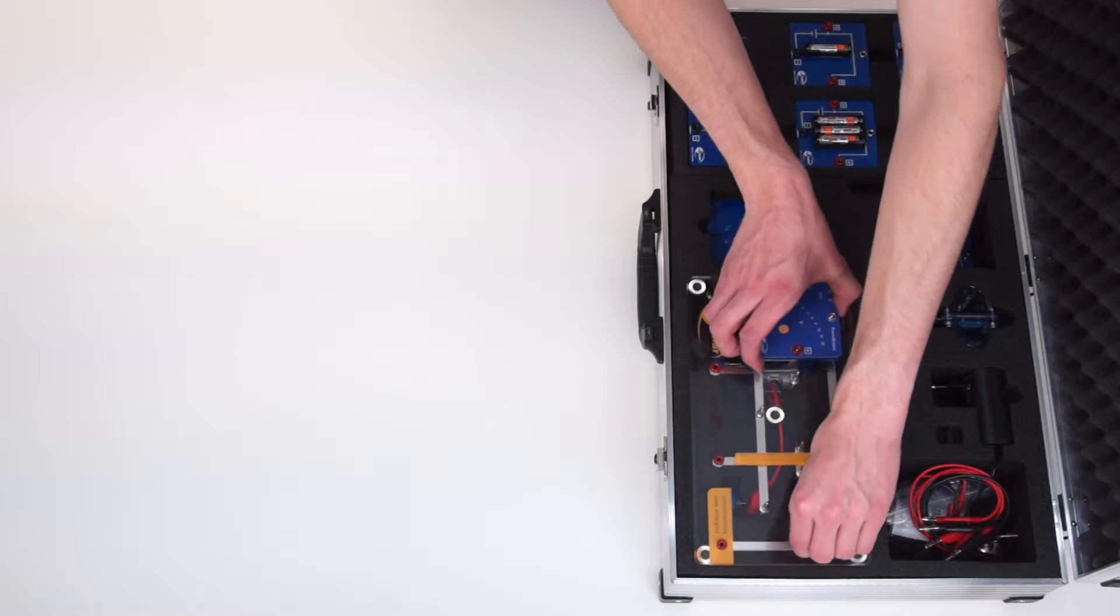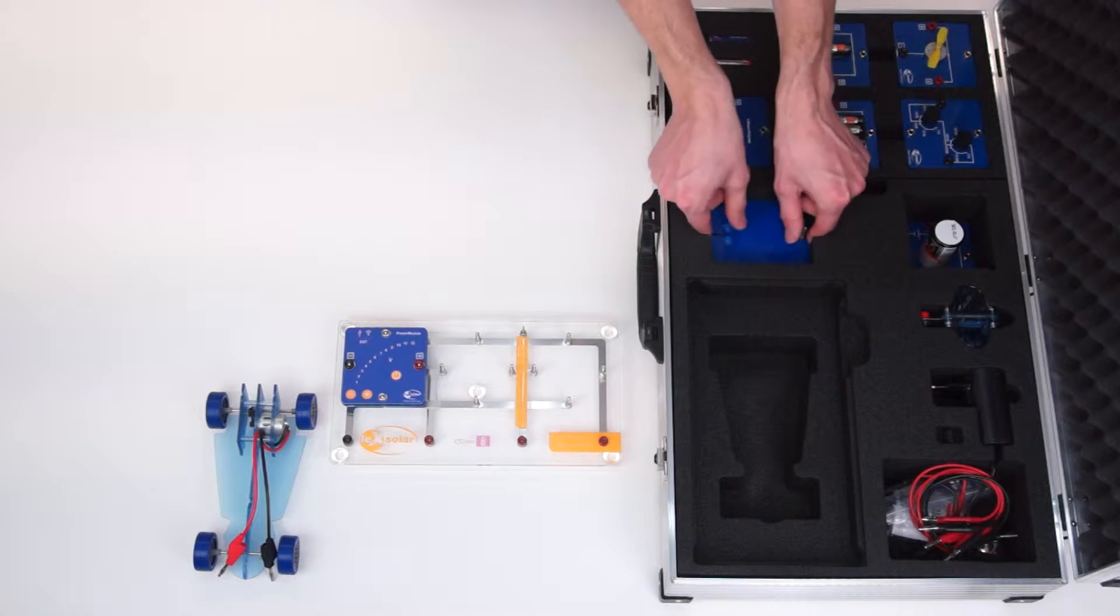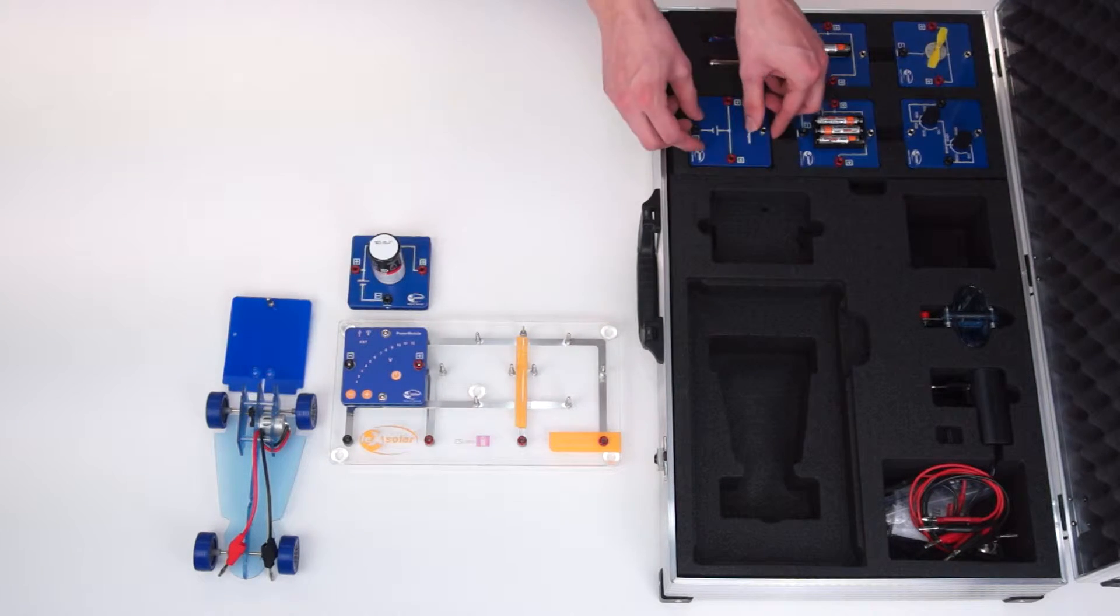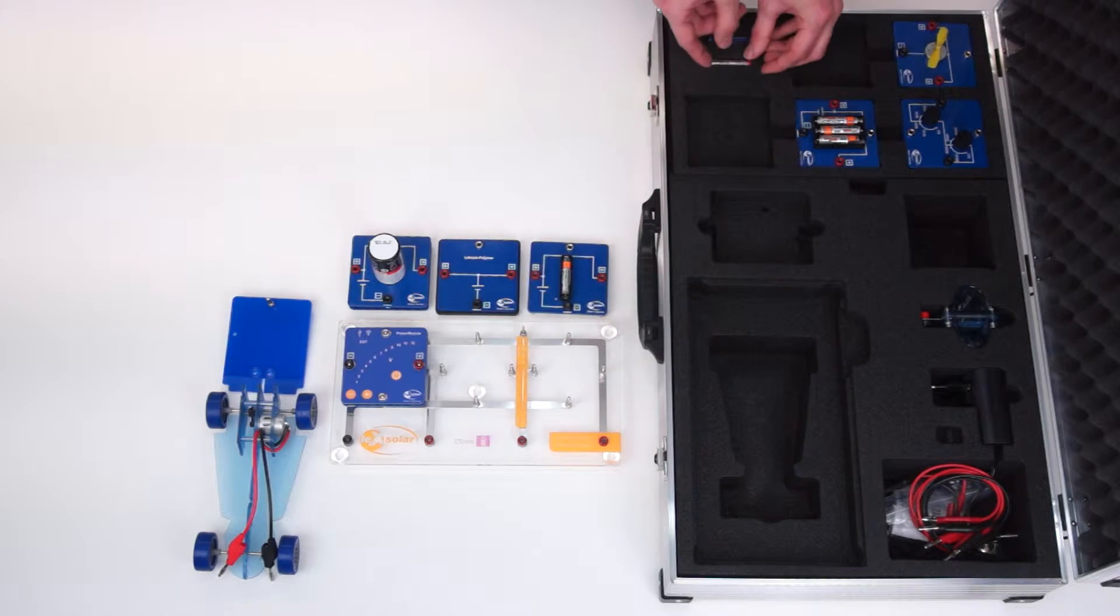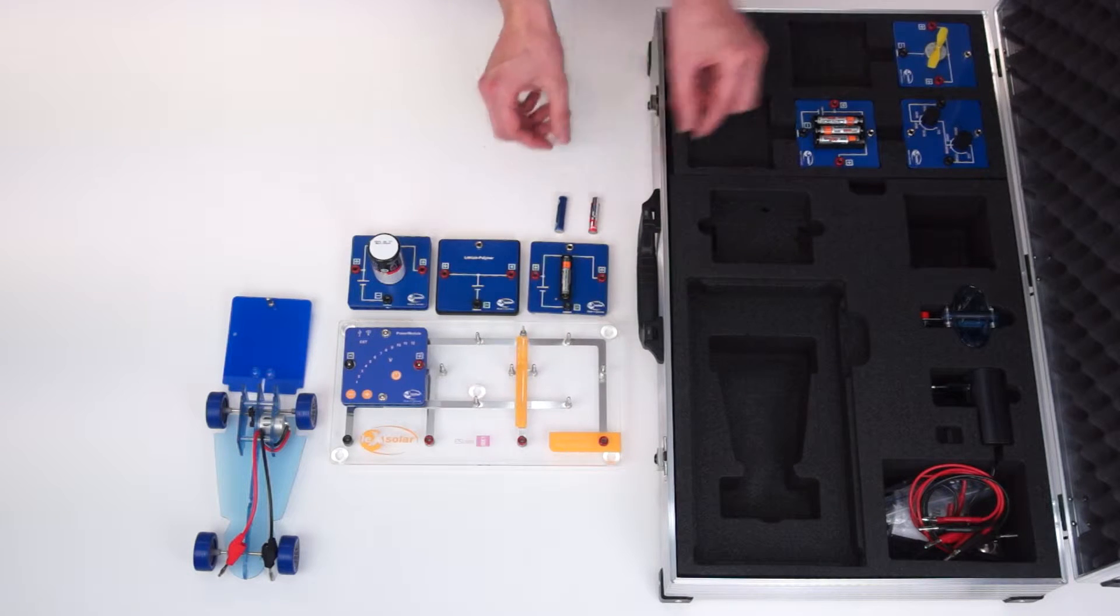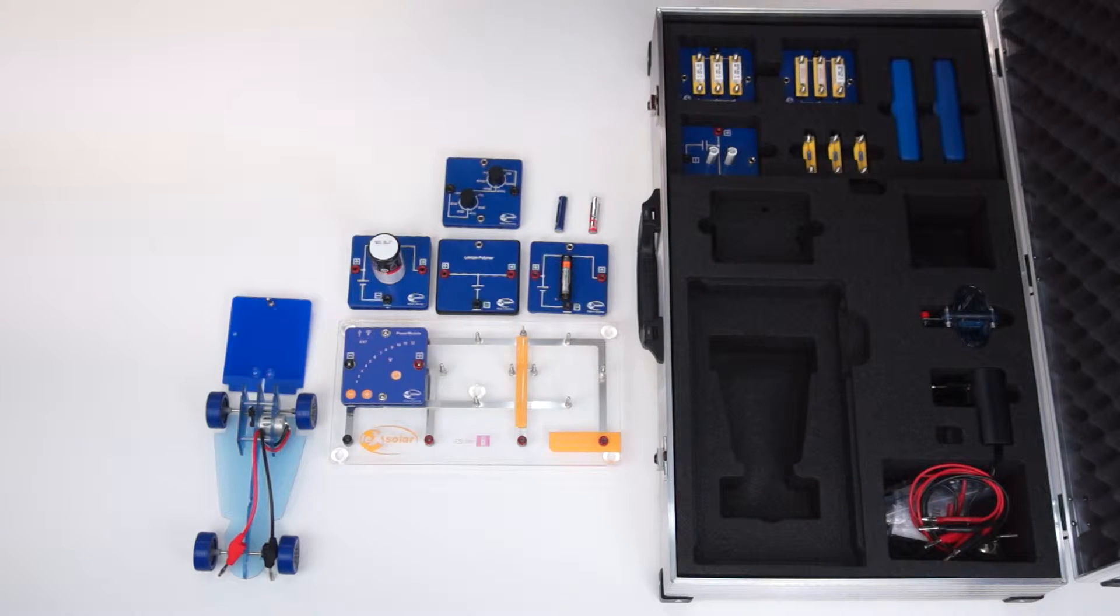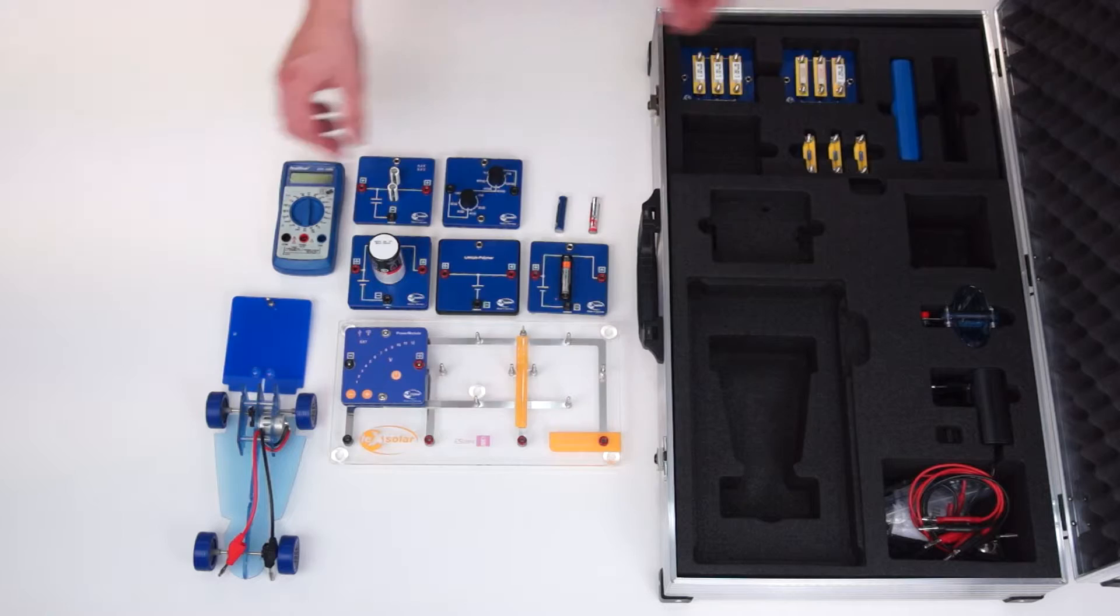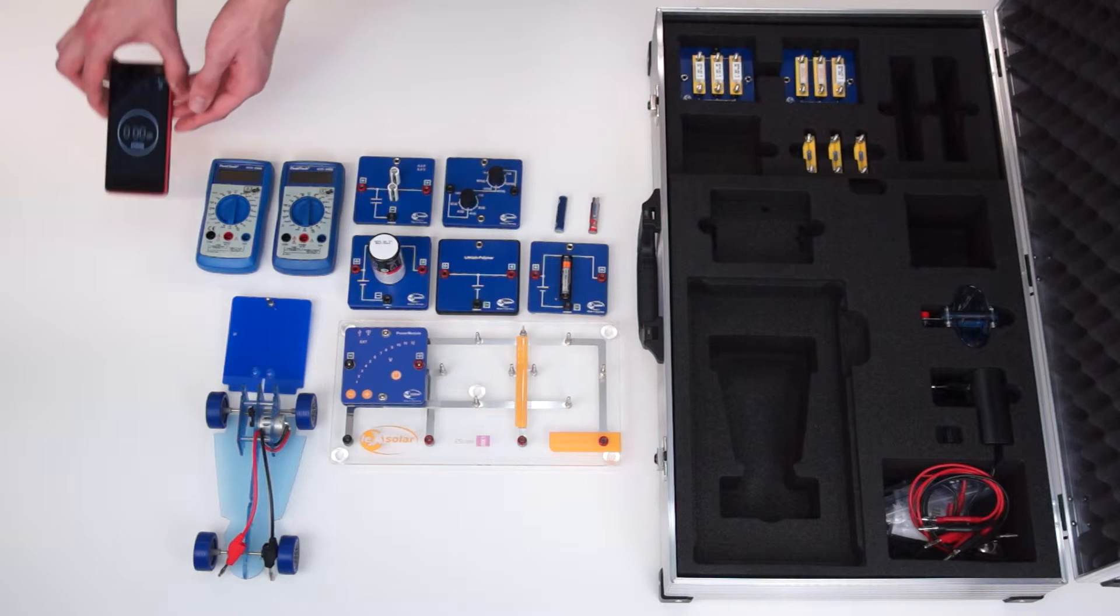For this we need the base unit with the power module, the electric model car with the appropriate battery adapter, the lead battery, the lithium polymer battery, the nickel metal hydride battery which is already in the battery module, the nickel zinc battery, the lithium iron phosphate battery, the potentiometer, the capacitor, two multimeters, cables and a power supply. Furthermore, we also need a stopwatch and tape.